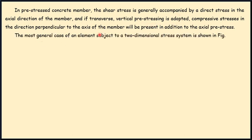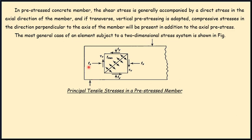The most general case of an element subject to a two-dimensional shear stress system as shown in the figure. This is the principal tensile stresses in a pre-stressed member. Here is the support reaction acting and here is the load acting. When these two are acting at the end junction, if we take a small element, this will have a diagonal force which is going to act.